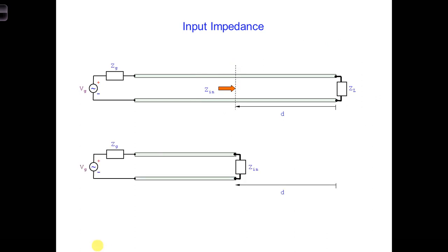An equivalent circuit for Zin is shown here. That is, we could remove all the transmission line and the load beyond it and replace it with a circuit element equal to the input impedance. If we did this, the behavior of the sinusoidal steady-state voltages and the currents on this part of the transmission line would be identical to those on the transmission line on the bottom of the slide.